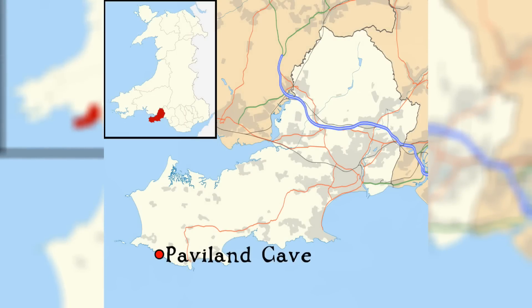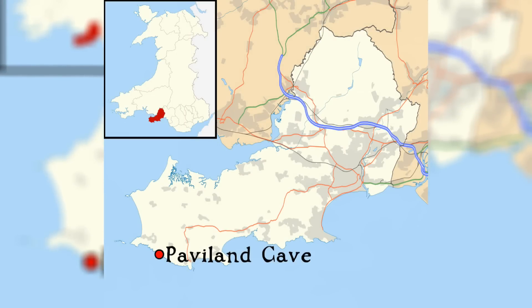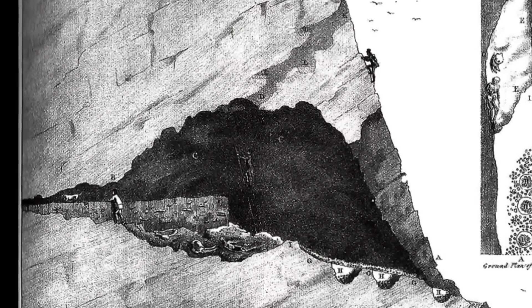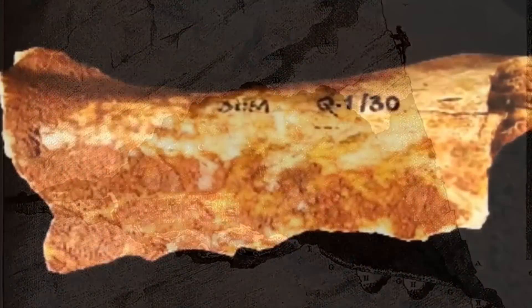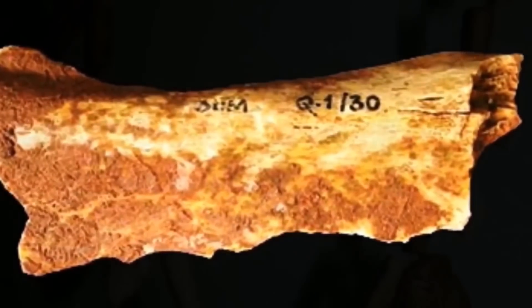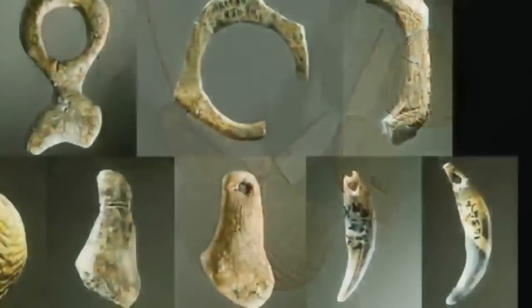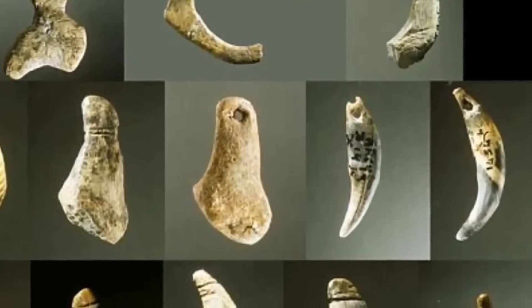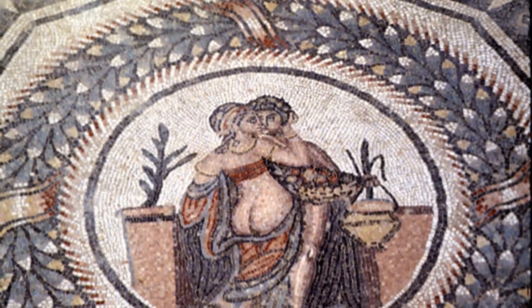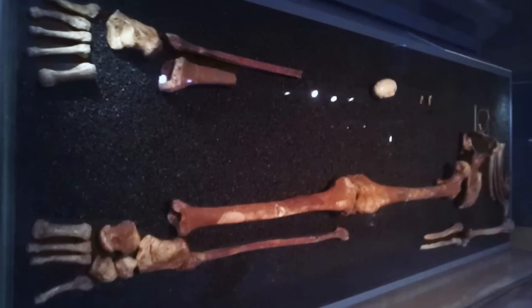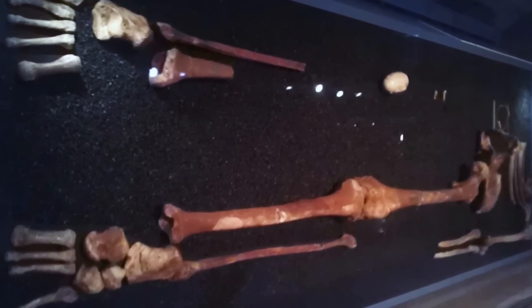First, we go to the Gower Peninsula in South Wales and Paviland Cave. It was here in 1823 that William Buckland, a geologist from Oxford University, first explored a cave which contained the burial of a human being. There were a few bones remaining, and what did remain was covered with a reddish powder. The skeleton was accompanied by jewellery, some of which was made from what he assumed was elephant ivory, but was in fact ivory from a mammoth. Buckland was very much a man of his time and a fan of the Romans. He concluded that these bones were from a Roman prostitute, and that the ochre residue staining the bones red were in fact the remnants of make-up, or possibly even hair dye — something which Roman prostitutes were known to wear rather conspicuously.